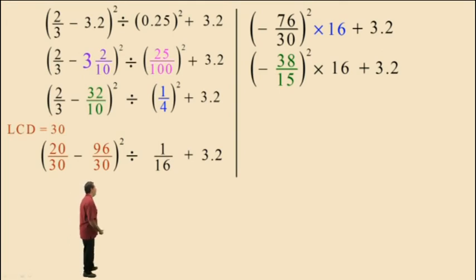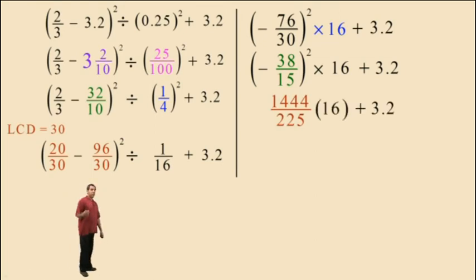We've brought down our work, and now negative 38/15 squared means negative 38/15 times negative 38/15. Negative times negative is positive, right? So when you perform that calculation, you should get 1,444 over 225. And let's bring down our work.